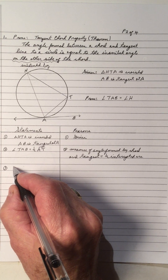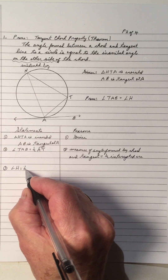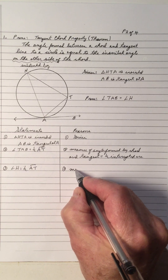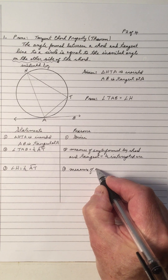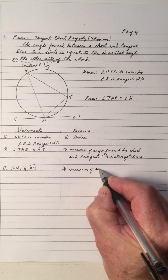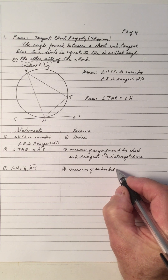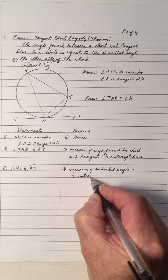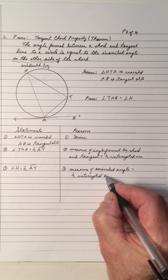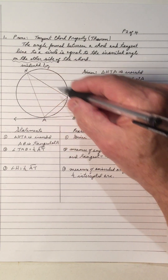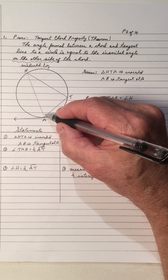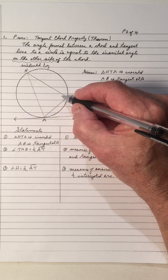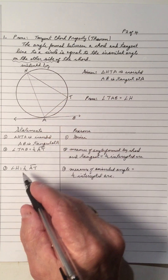Similarly, angle H equals half of arc AT. Number three: the measure of the inscribed angle equals half the intercepted arc. This inscribed angle H is half of its intercepted arc. The inscribed angle at A is half of arc HT, and angle HTA is half of arc HA. So both angle TAB and angle H equal half of arc AT.